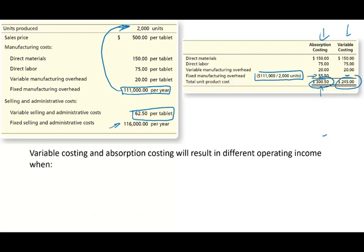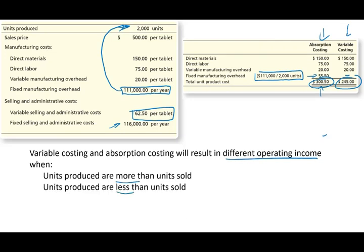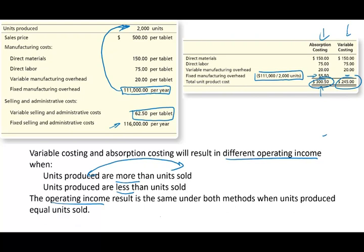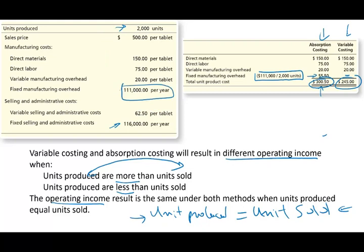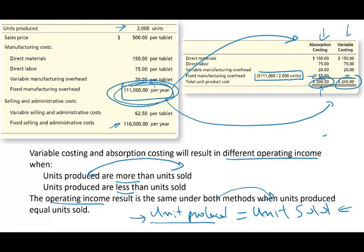Variable and absorption costing result in different operating income when units produced differ from units sold. When units produced equal units sold, operating income is the same. If we produce and sell everything, the $111,000 fixed manufacturing overhead is expensed under both methods — therefore they equal each other.